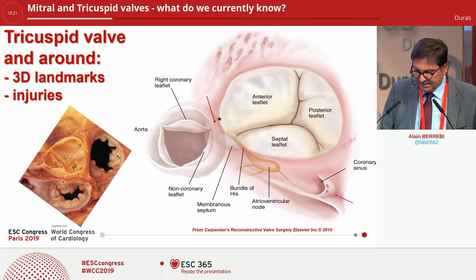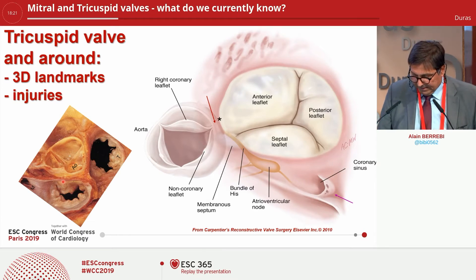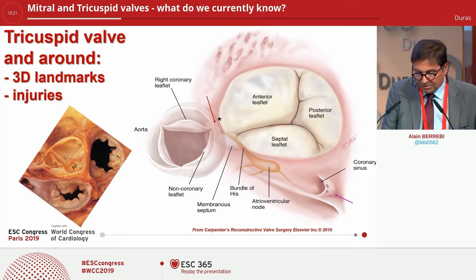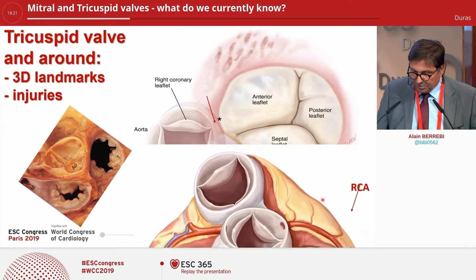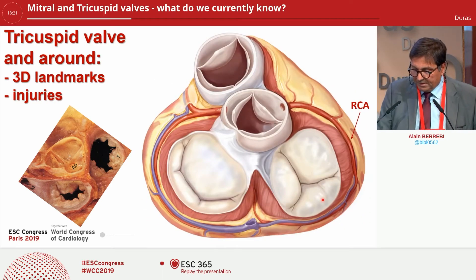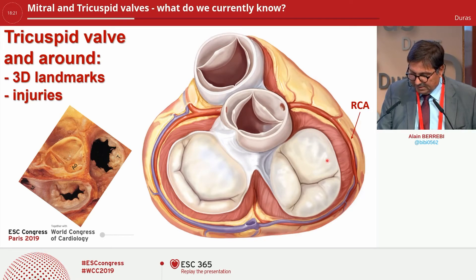What about the tricuspid valve? We have three leaflets: the anterior, the posterior, and the septal leaflet, which is very important. We have to know some surrounding structures for 3D landmarks and the risk of injuries. The aortic valve is here on the left, and the coronary sinus, and most importantly, the right coronary artery at this level, particularly at the level of the anterior-posterior commissure.